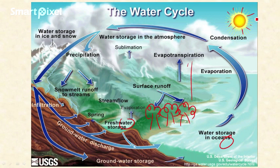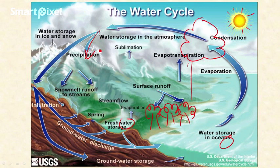Plants and forests contribute water to the atmosphere through transpiration. Evapotranspiration contributes water to the atmosphere in the form of water droplets. In the atmosphere, water is condensed, leading to the formation of clouds. These clouds contribute water back to the surface in the form of precipitation. Precipitation returns water to the Earth, where it is stored in freshwater storage, ocean storage, and some water infiltrates into the ground as groundwater storage.